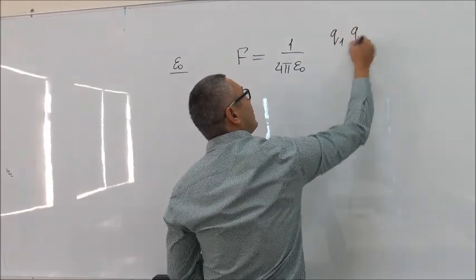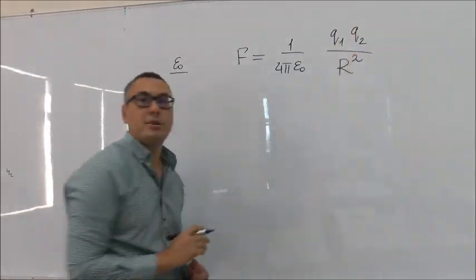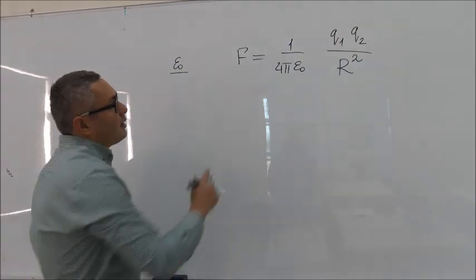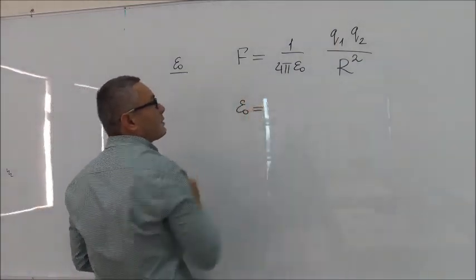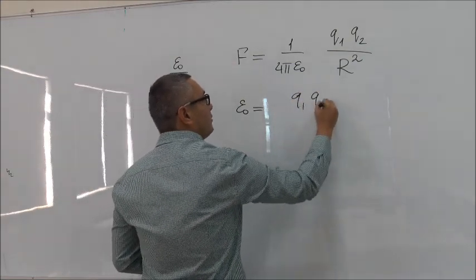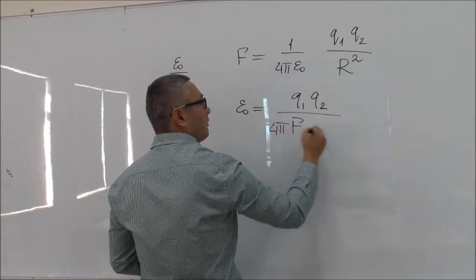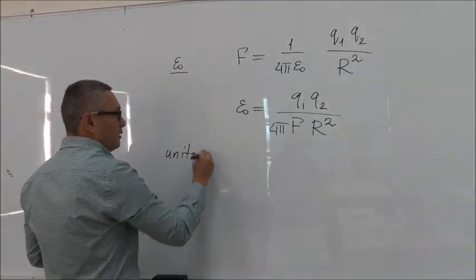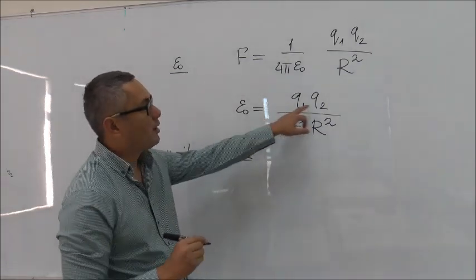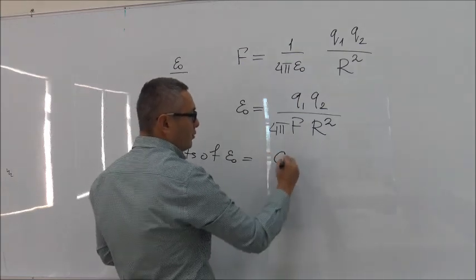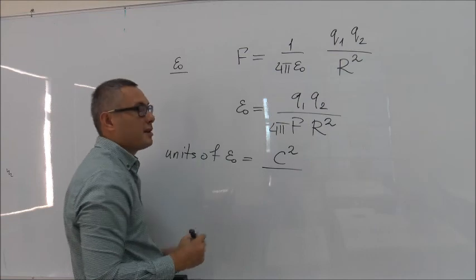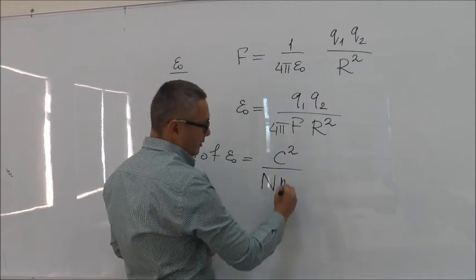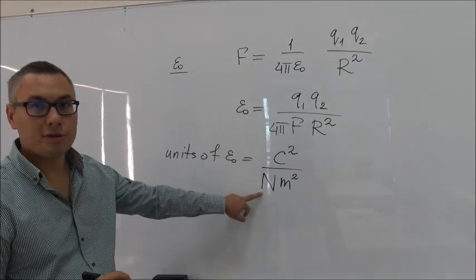q1 first charge, q2 second charge over r squared, the distance between the two charges. So to find the units of epsilon zero, we just need to work it out and rearrange things to get epsilon zero in terms of all the other variables. So epsilon zero is equal to q1 q2 over 4 pi F R squared. So now we can write down the units for epsilon. Units of epsilon: q1 and q2 are measured in coulombs, so we have coulomb squared. 4 pi is just a number so it has no units, so we ignore it. Force has units of Newton, R squared is meter squared.